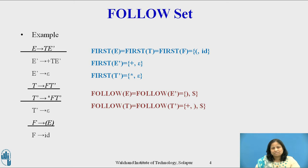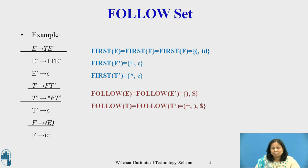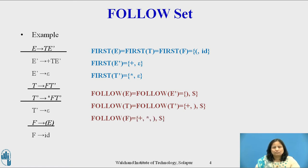Since in T' derives star F T', T' derives epsilon, by Rule 2 everything other than epsilon in the first of T' must be placed in the follow of F. Also, by Rule 3 applied to T' derives star F T', since first of T' contains epsilon, follow of T' will also be in the follow of F. Hence, follow(F) equals {plus, star, right-parenthesis, dollar}.